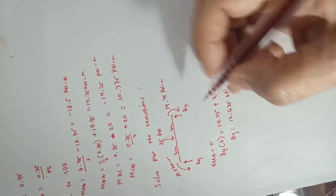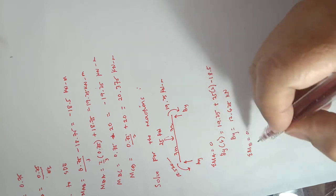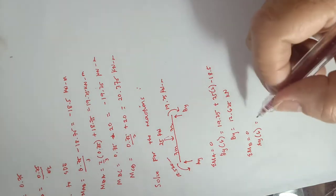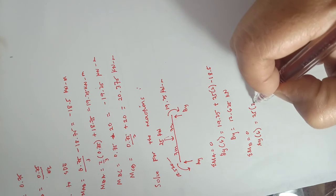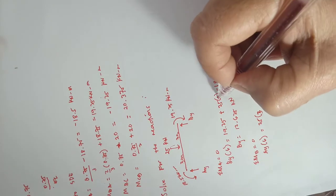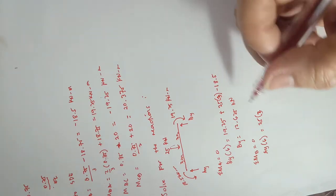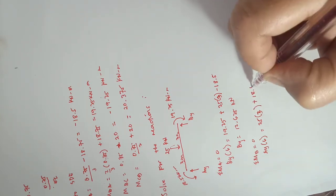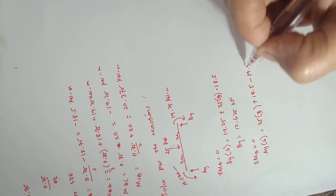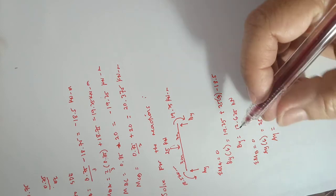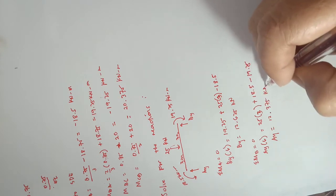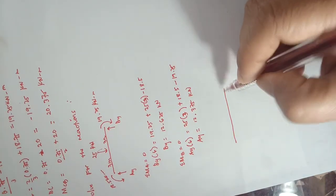Next we sum moments at B equal to zero to find A_y. A_y times 6 equals 25 times 3 plus 18.5 minus 19.25. Solving, A_y equals 12.375 kilo-newtons.